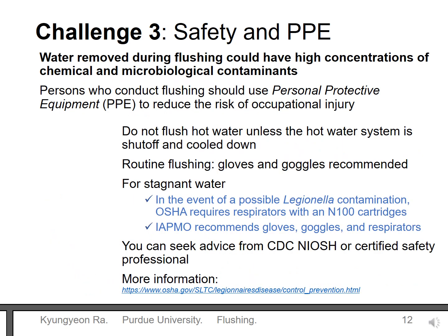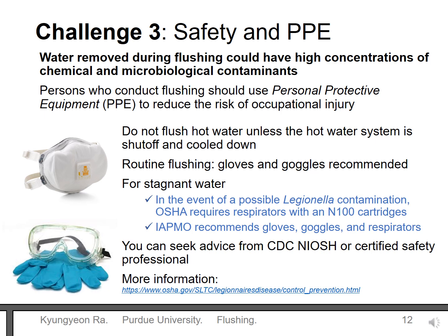Another challenge with flushing concerns workers. Different levels of personal protective equipment are needed depending on what is in, or what could be in, the water. Scalding is a real concern for hot water. Some buildings have very hot water and hot water recirculation systems, so do not flush hot water directly. Typically these systems are shut off and then cooled, and after cooling these systems should be flushed with cold water. If the cold or hot water contains high concentrations of chemical and microbiological contaminants, persons who conduct the flush should wear safety gear such as gloves, goggles, and consider a mask. N95 masks were approved by NIOSH, but when harmful organisms like Legionella are suspected to be present, OSHA requires wearing N100 respirators with cartridges.